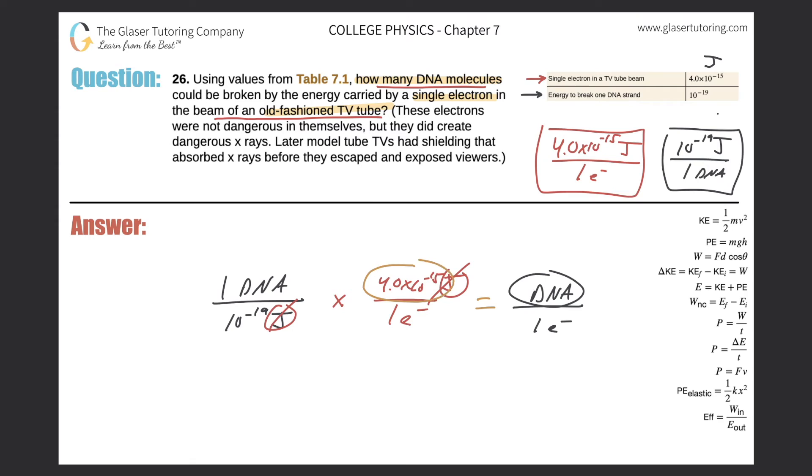So basically it's 4.0 times 10 to the minus 15 divided by 10 to the minus 19. And let's plug that in. So 4 times 10 to the minus 15 divided by 10 raised to the minus 19. And we get a value of 40,000.